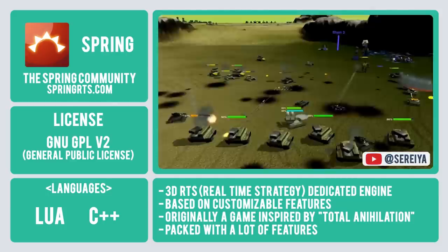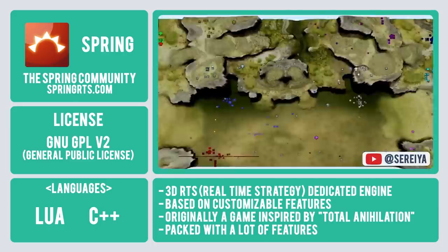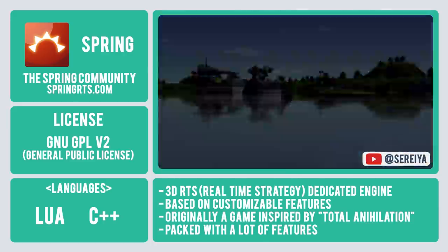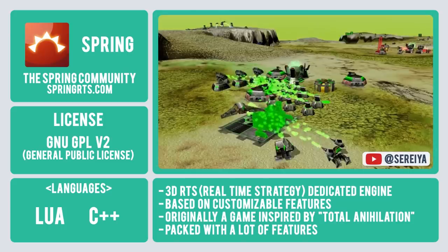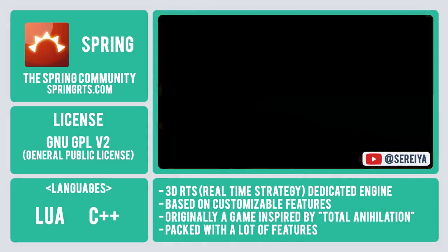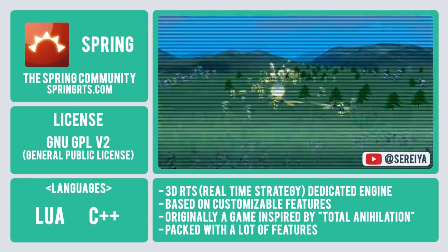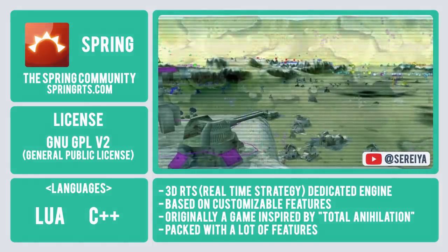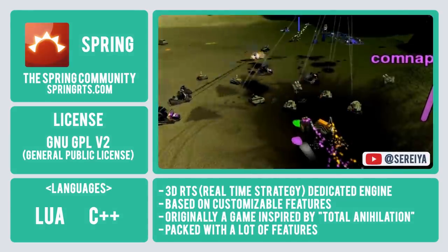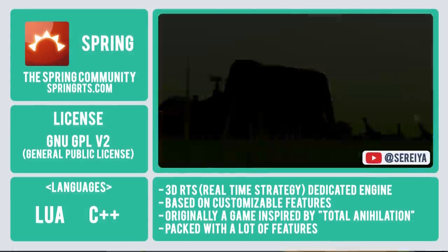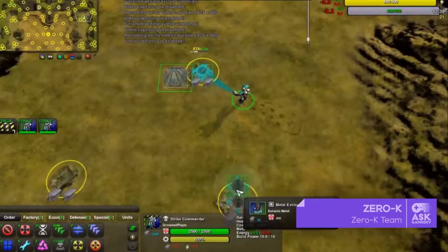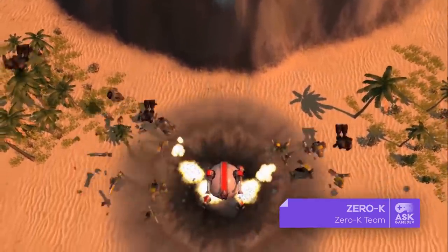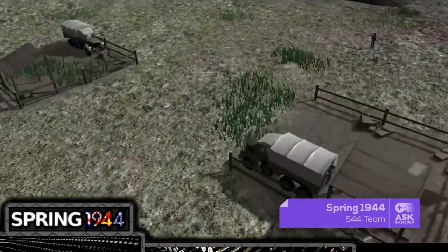This guarantees end users the freedom to run, study, share, and modify the software. Features of the Spring Engine include support for battles of up to 5,000 units, support for large maps featuring deformable terrain, forest fires, dynamic water, and custom skyboxes, fully 3D combat on land, sea, and air, and complex 3D party AIs. Titles developed with Spring Engine include Zero K and Spring 1944.